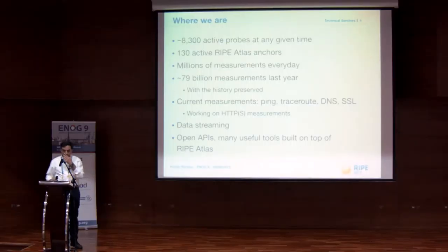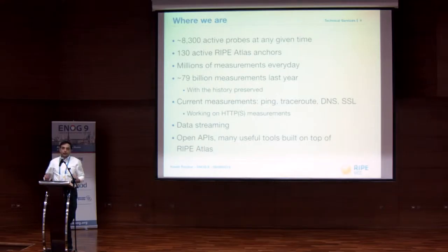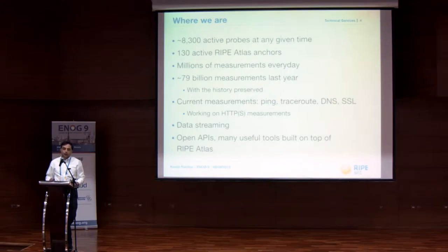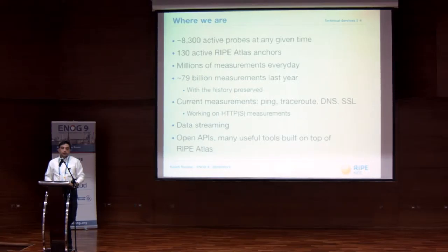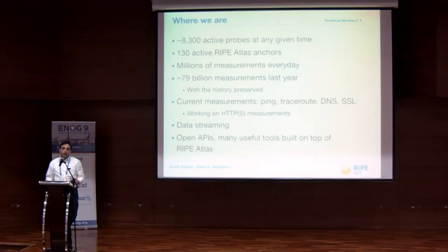You heard a lot about RIPE Atlas yesterday in the morning session. It's a large active measurements network with about 8,300 active probes at any given time. You can use this network to measure from any of these probes to any destination in the world. We also have 130 active RIPE Atlas anchors — these are more stable machines designed for data centers. All history is preserved, so when you do a measurement, it's in the system and you and others can access it.